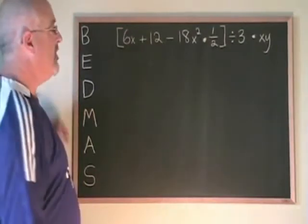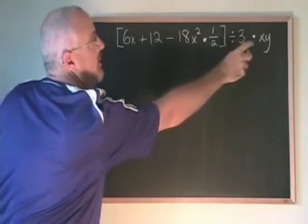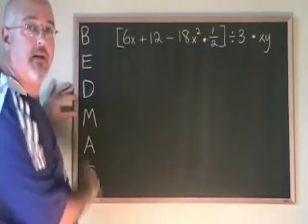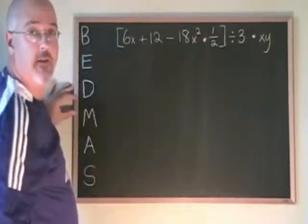In this example, we have a big bracket, a division, a multiplication. BEDMAS says brackets first, so we want to simplify inside of this bracket.